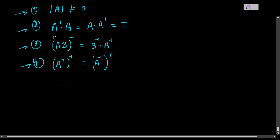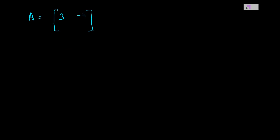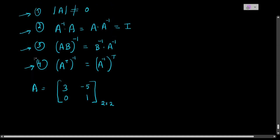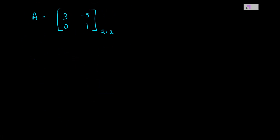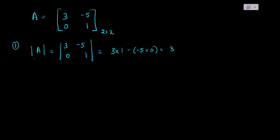We already discussed the first point, so let us verify the second one. I am taking a 2×2 matrix A with elements 3, −5, 0, 1. First, the determinant of A: cross-multiplying, 3×1 minus (−5×0) gives 3 minus 0 equals 3, which is not equal to 0. So the inverse exists.